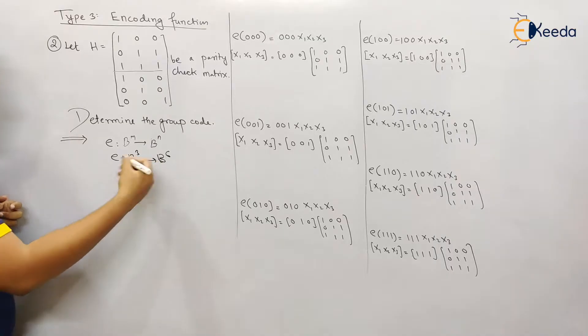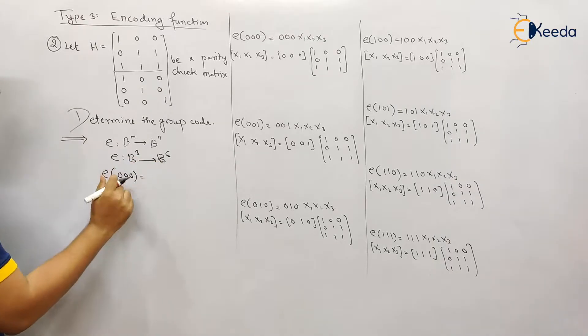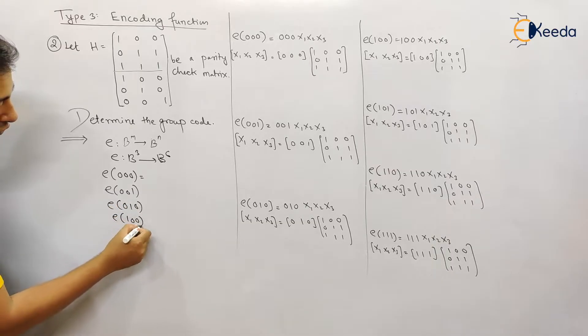That indicates on left hand side there will be the code of length 3. So this is 0 0 0, next 0 0 1, what is next: 0 1 0, 1 0 0, 0 1 1.